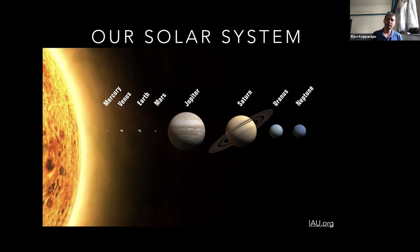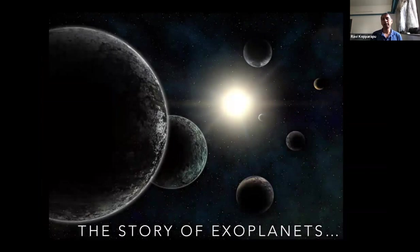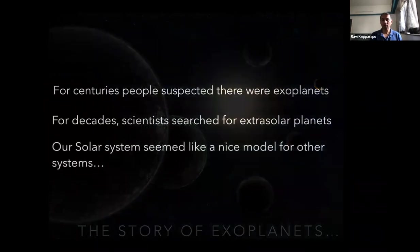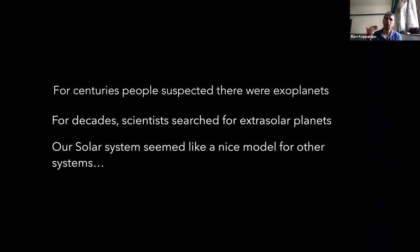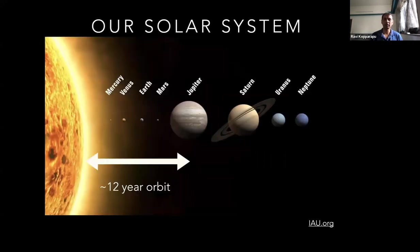There were searches later on for planets outside the solar system — this is where the beginnings of how exoplanets were discovered. For centuries, people suspected there were exoplanets. For decades, scientists searched for them. Exoplanets, or extrasolar planets, are planets orbiting stars other than the sun. Our solar system seemed like a nice model for other systems, so we expected to find similar arrangements — if our solar system had Jupiter-sized planets in this kind of arrangement, maybe we'd find similar star systems if we started looking for them.